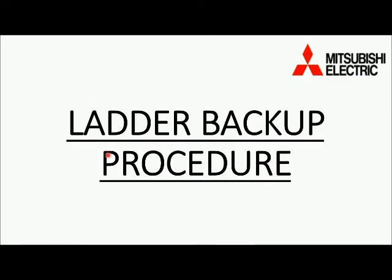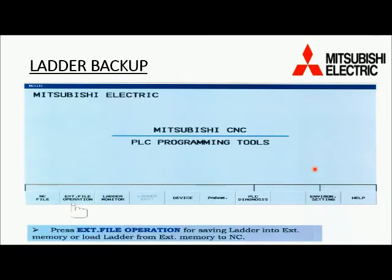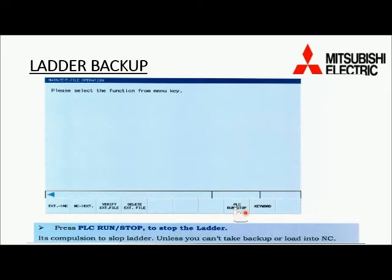Now we come to the last procedure, which is ladder backup. For ladder backup, press F0 from the keyboard. The ladder backup screen will appear. Note: for ladder backup you have to input the password MPA in the password input screen. Then the second option is extension dot file operation — press it. Next, the second option is PLZ run/stop — press it to stop the PLZ before taking the backup.